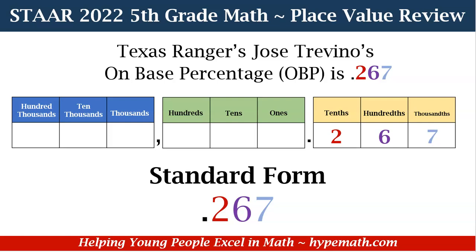In the place value chart, let's look at our values. We have the thousands place, the hundreds place, the tens and ones, and then we have a decimal point. Right on the other side of the decimal point we have the tenths, hundredths, and thousandths places.